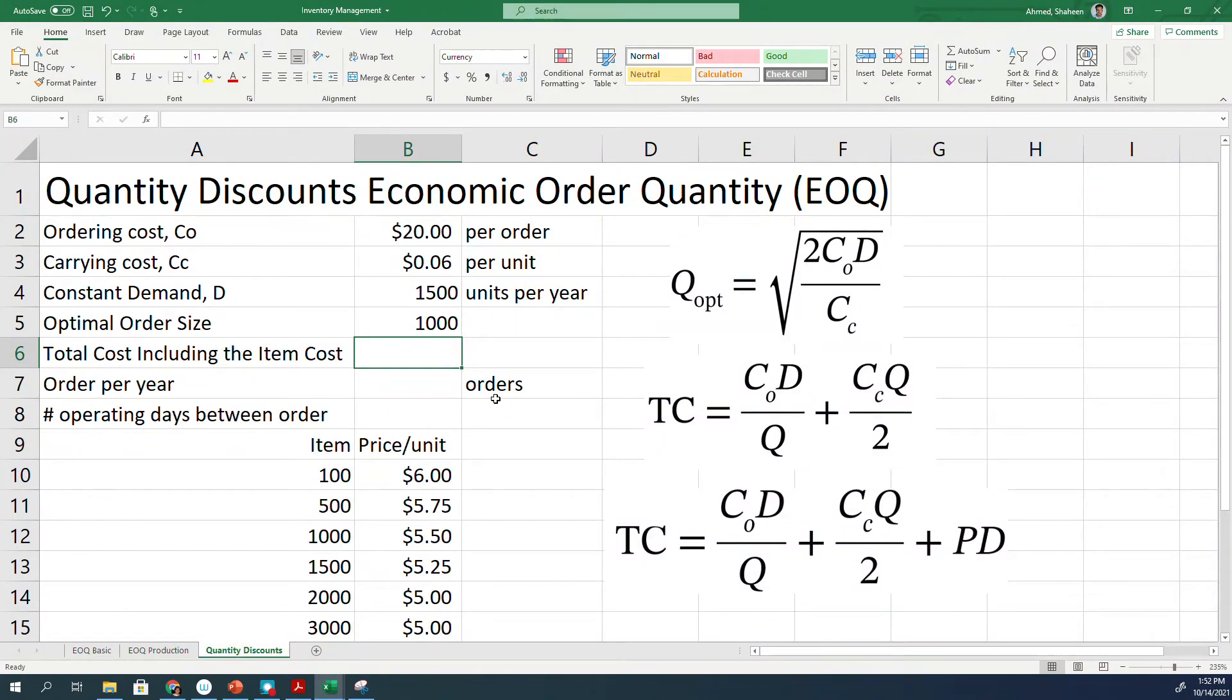Now the total cost is going to change because it will include the item cost as well. So let's calculate the total cost: CO times D divided by Q, which is 1,000, plus the CC carrying cost times the Q order size divided by 2, plus price per unit.